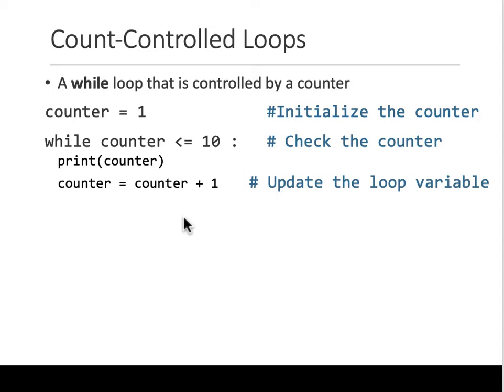Then count control loops. A loop that is controlled by a counter. What does that mean? You have a variable that is used as a count. So here you're saying that variable is one, then while that variable is less than or equal to some condition. So here you're saying while that variable is less than or equal to 10, do what? Do all this. Remember the tab. So do all this.